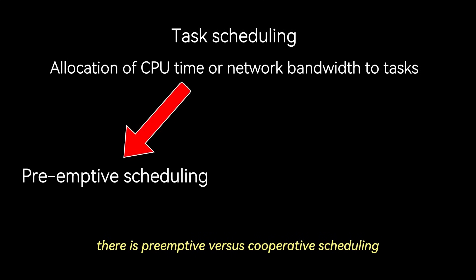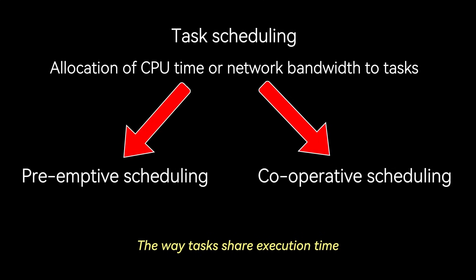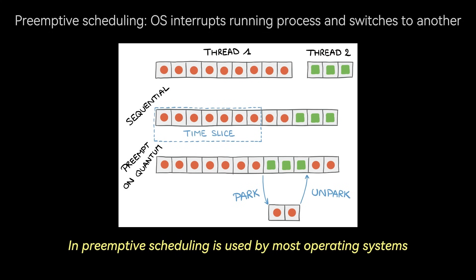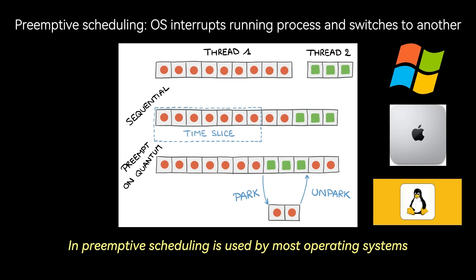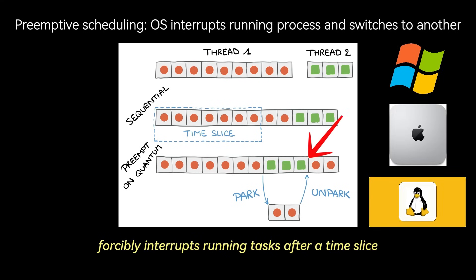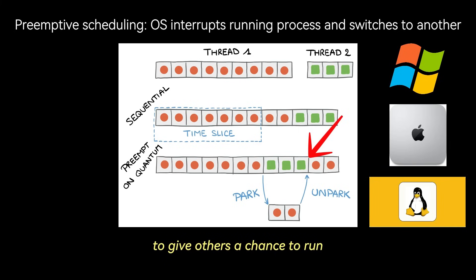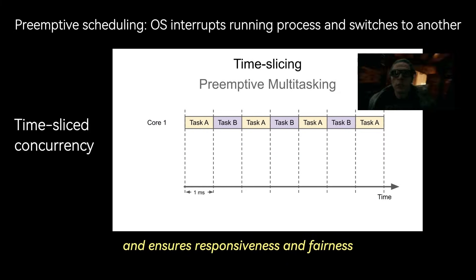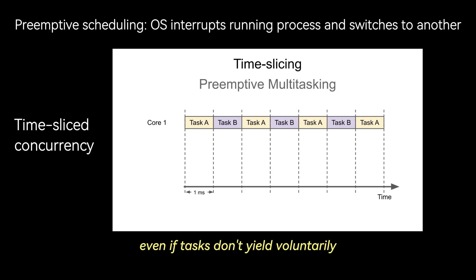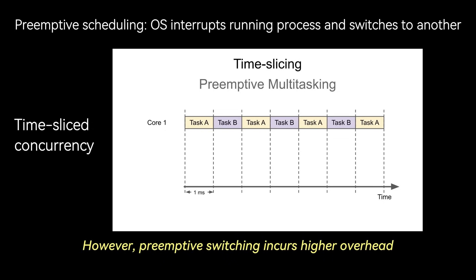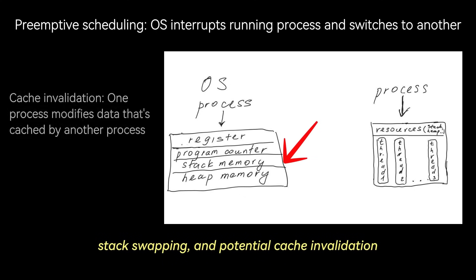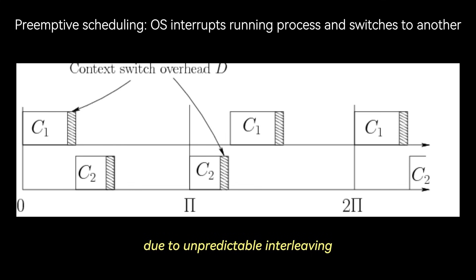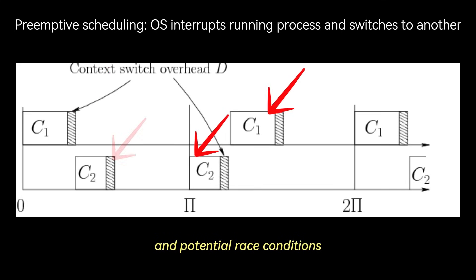Now for task scheduling: preemptive versus cooperative scheduling. The way tasks share execution time is governed by the scheduler, which can be preemptive or cooperative. In preemptive scheduling, used by most operating systems, the scheduler forcibly interrupts running tasks after a time slice to give others a chance to run. This enables time-sliced concurrency and ensures responsiveness and fairness, even if tasks don't yield voluntarily. However, preemptive switching incurs higher overhead due to register saving, stack swapping, and potential cache invalidation, and makes concurrent code harder to reason about due to unpredictable interleaving and potential race conditions.